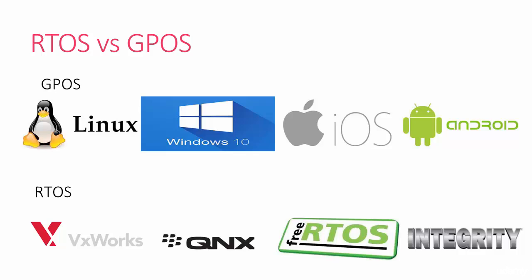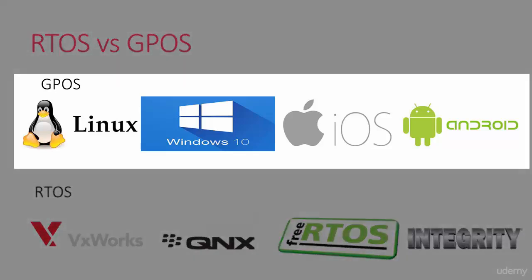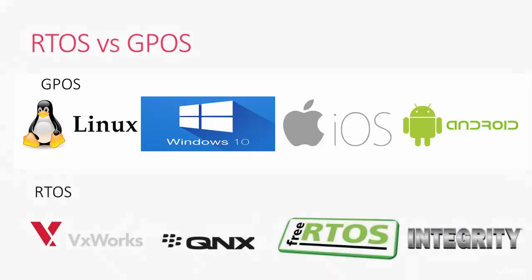Examples of general-purpose operating systems — you may already know this — all your desktop operating systems are for general-purpose use. Well-known operating systems like Linux, Windows, Mac OS, iOS, and Android, famously used for tablets and mobile phones, all fall into the category of GPOS.